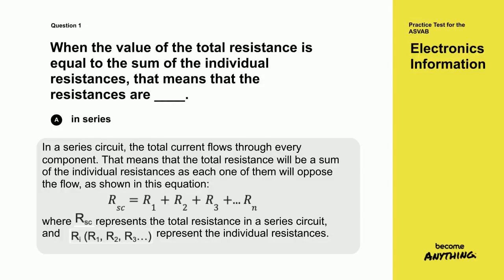In a series circuit, the total current flows through every component. That means that the total resistance will be a sum of the individual resistances as each one of them will oppose the flow, as shown in this equation. Where RSC represents the total resistance in a series circuit, and R1, R2, R3, represent the individual resistances.